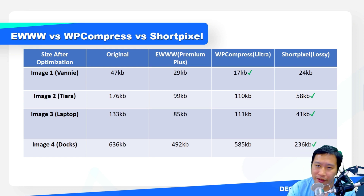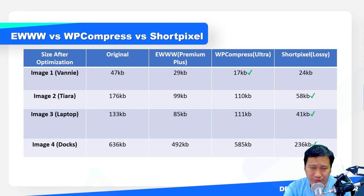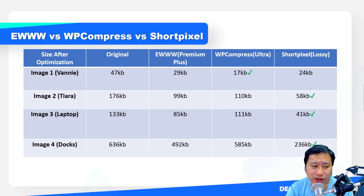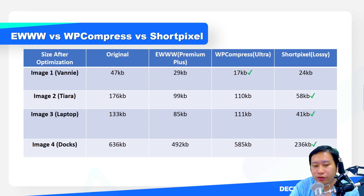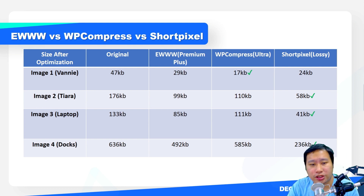The fourth image is a photo of dogs with water, ground, and people in the background — a complex scene with lots of detail. The original image is about 636 KB. Ewww brings it down to 492 KB, WP Compress brings it to 585 KB — a very little savings — and Short Pixel brings it down to 236 KB, which is more than 50% compression. Short Pixel is the clear winner for file size compression.